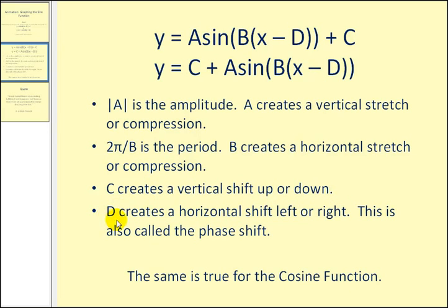And lastly, D creates a horizontal shift left or right. And this is also called phase shift. And if we see X minus D, the shift will be D units to the right. If we see X plus D, it will be D units to the left.